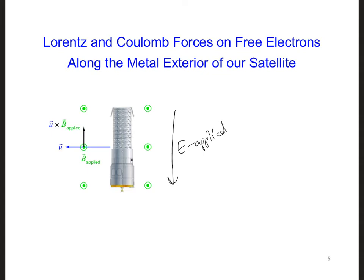This will produce a Coulomb force on the electrons. And so here, F Coulomb is the electric field times the charge. In this case, the electric field is acting on an electron, so we have to put a minus sign here in front.